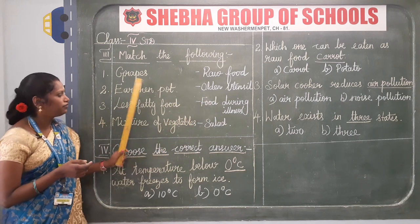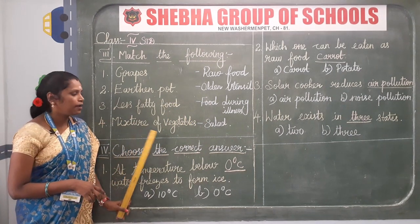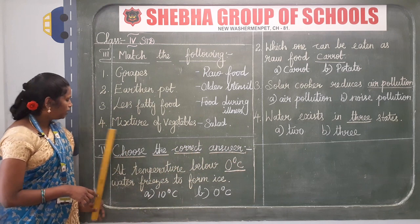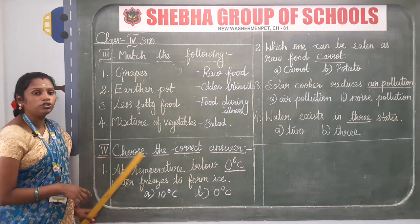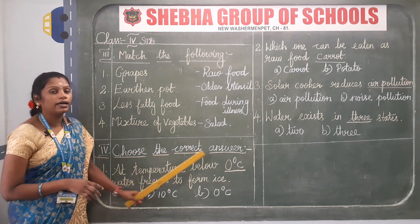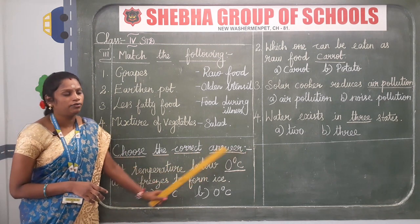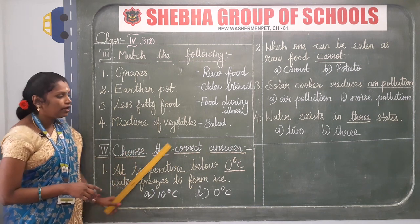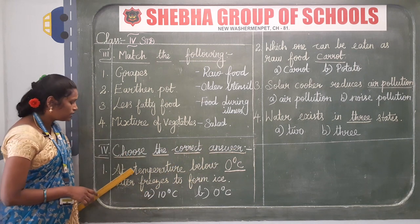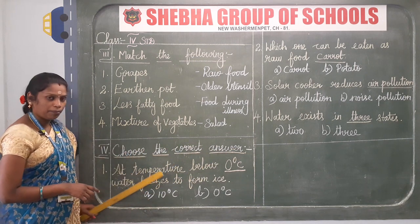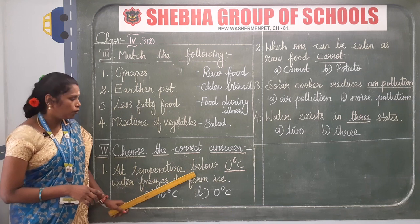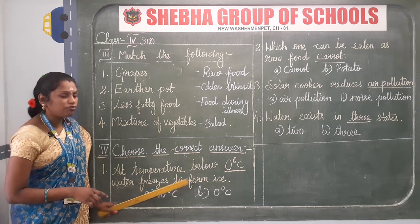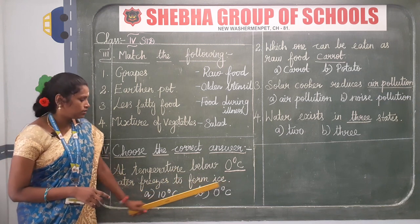After finishing this, take a scale and pencil and draw a line. Then go to the fourth Roman numeral letter: Choose the Correct Answer. First one: at a temperature below blank, water freezes to form ice.